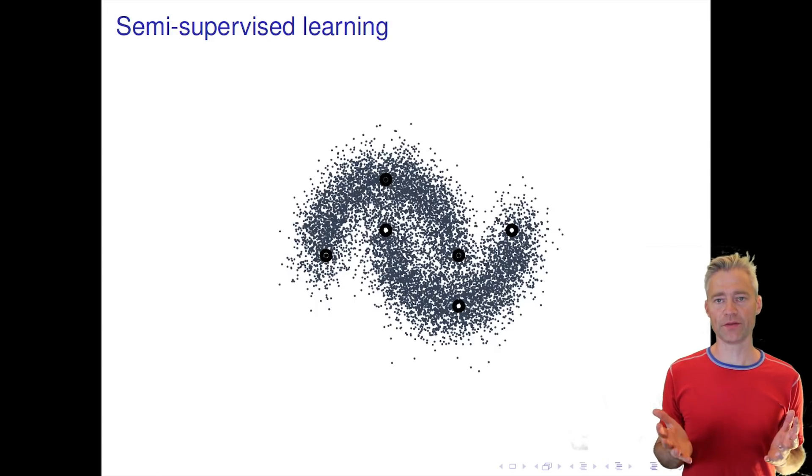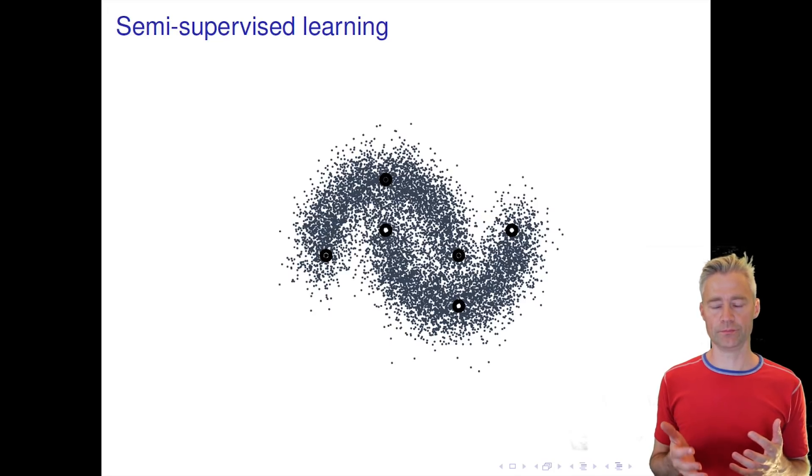So this was the basic introduction to variational autoencoders. In the remainder of my lecture, I will talk about how we can use this for semi-supervised learning.